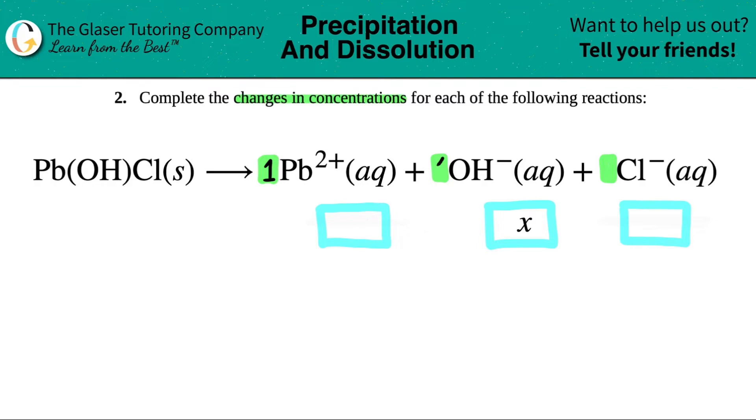I have one Pb2+, one OH-, and one Cl-. So all of these are in the same ratio, the number in front is the same exact number, all ones, which means that whatever the hydroxide is changing, which they labeled as X, the same change would be for the Pb2+ and the Cl-. So these would both have to be just X and just X.